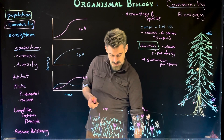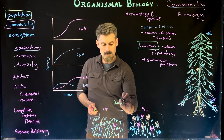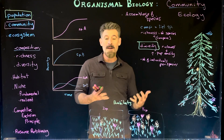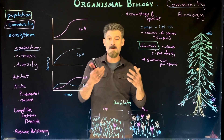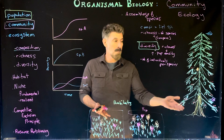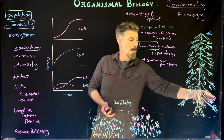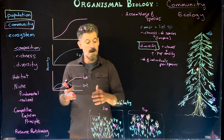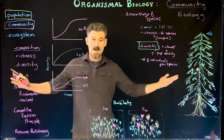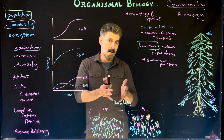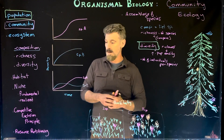Organisms live within a particular habitat — the place where they live, reproduce, and spend their time. Some organisms are sedentary and fixed in one place, like a tree. Others, like birds, can come and go but generally stay within a certain area. The range varies by species — some cover a vast area, others stay local.